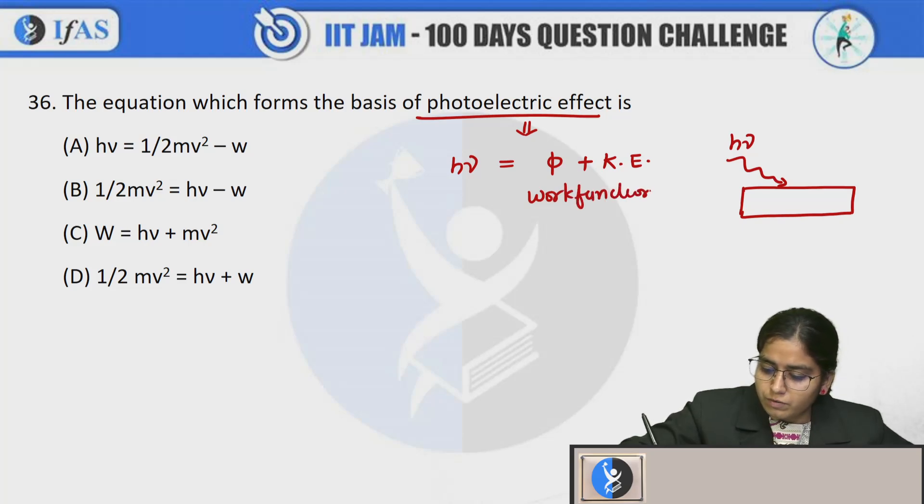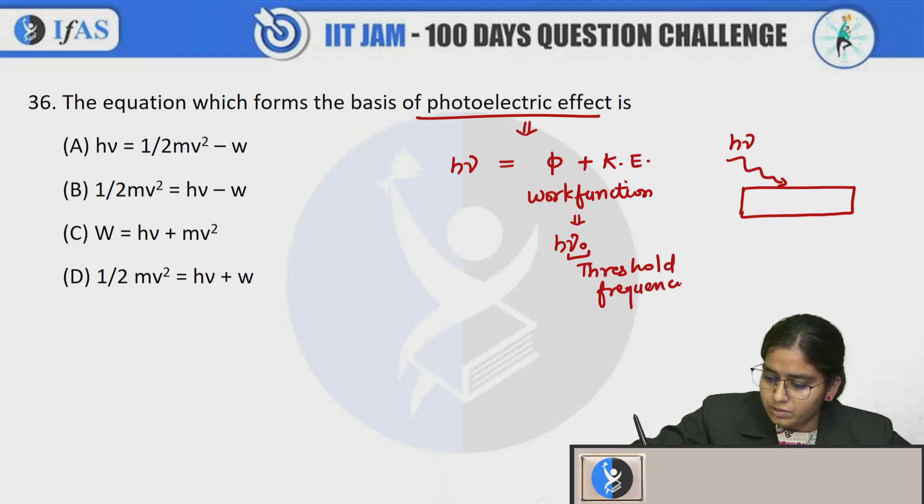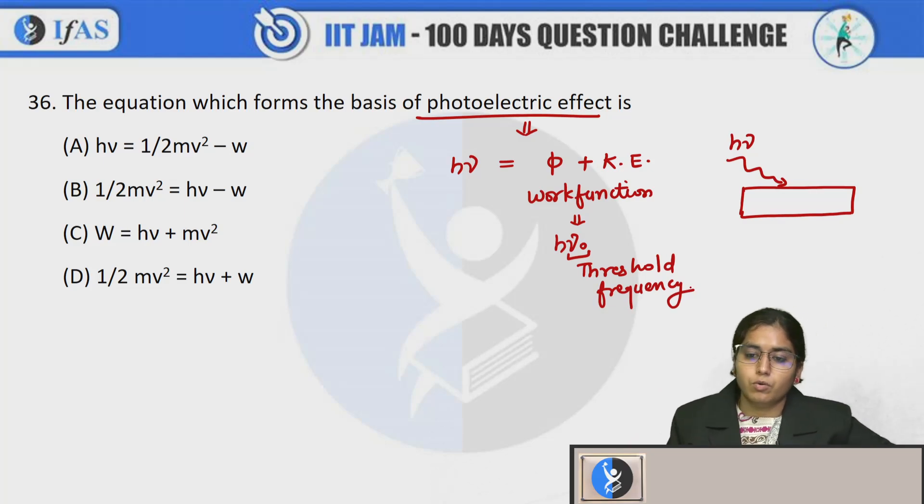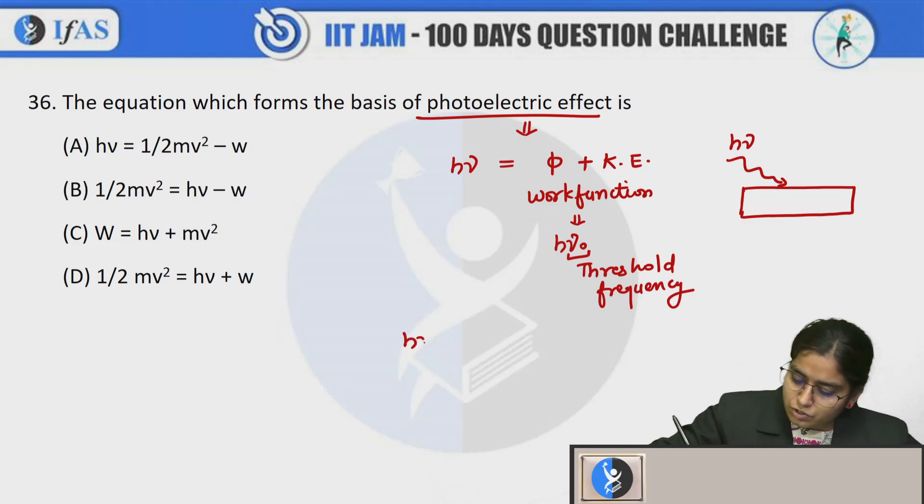This work function is nothing but the minimum amount of energy required for the ejection of electron. h nu naught - this will be the threshold frequency. So I can write h nu is equals to h nu naught.